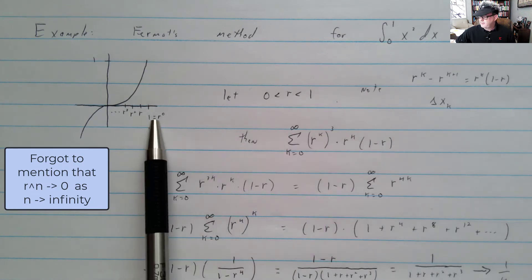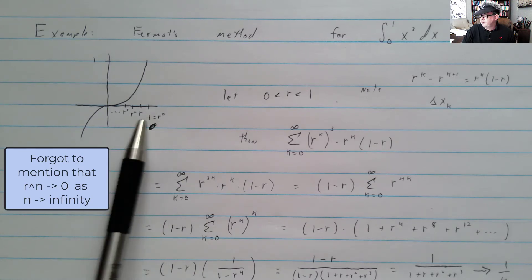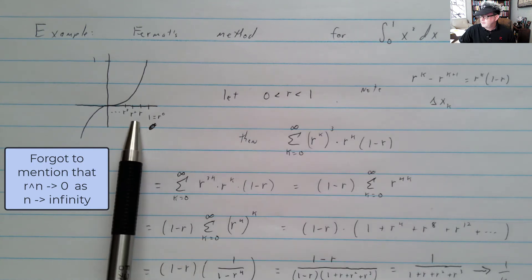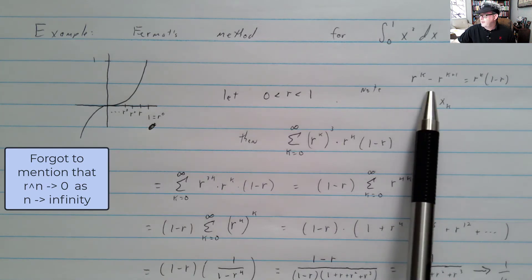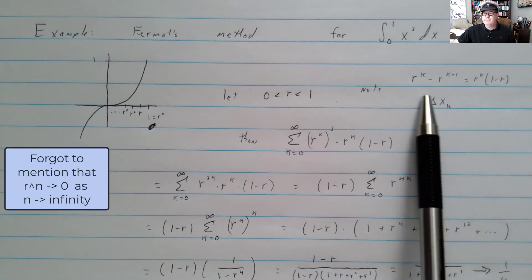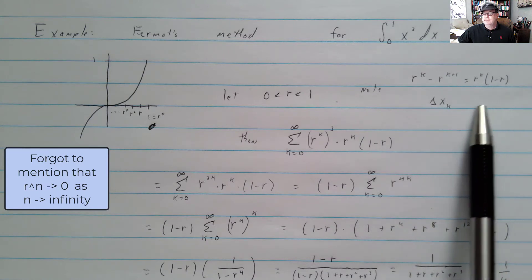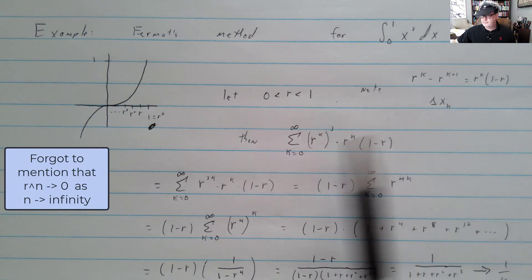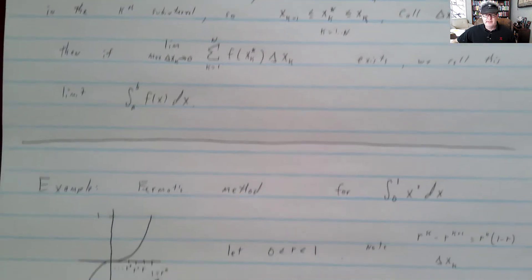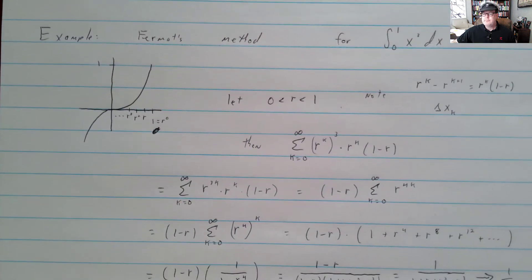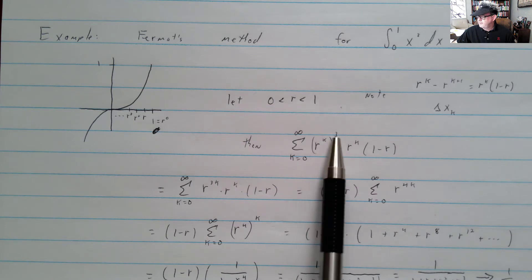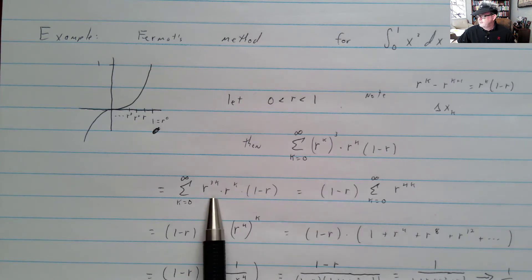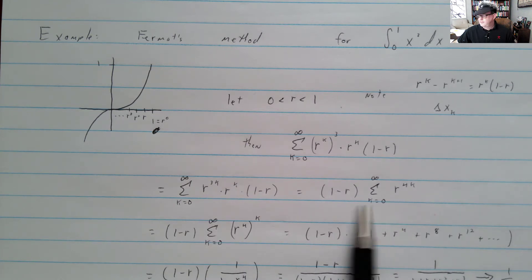The subinterval width Δx_k = r^k − r^(k+1) = r^k(1 − r). Since f(x_k) = (r^k)³ = r^(3k), the product f(x_k)·Δx_k = r^(3k)·r^k(1 − r) = r^(4k)(1 − r). We're using the more general definition here — not worried about equal spacing. Factor out (1 − r) from the sum and we have a geometric series with ratio r⁴: 1 + r⁴ + r⁸ + ..., converging to 1/(1 − r⁴).